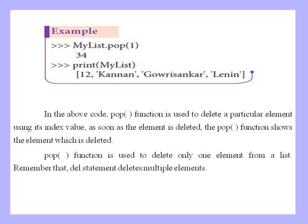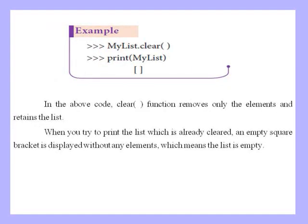Next is the clear function. Using mylist.clear() removes all elements and returns the list as empty. When you print the list after clear, an empty square bracket is displayed without any elements, which means the list is empty. The clear function removes only the elements and returns the empty list structure.